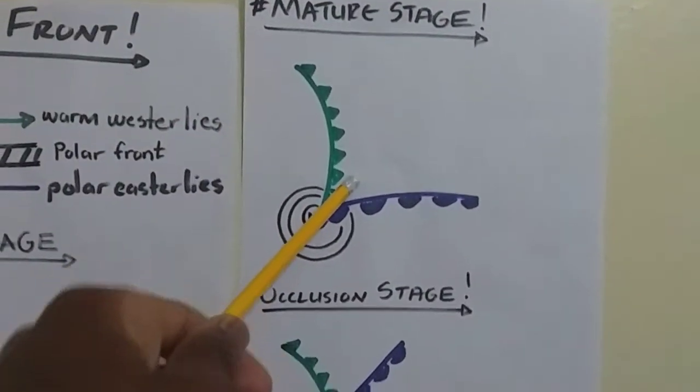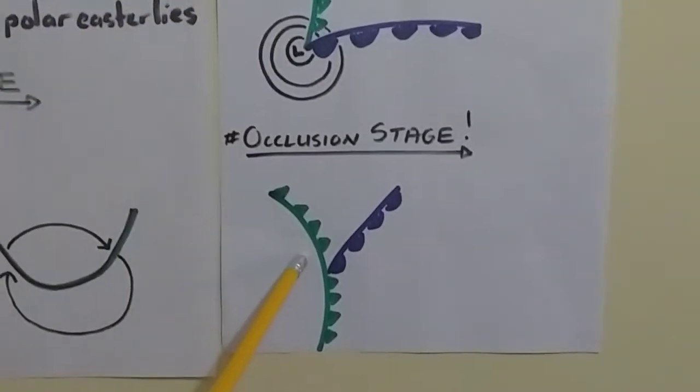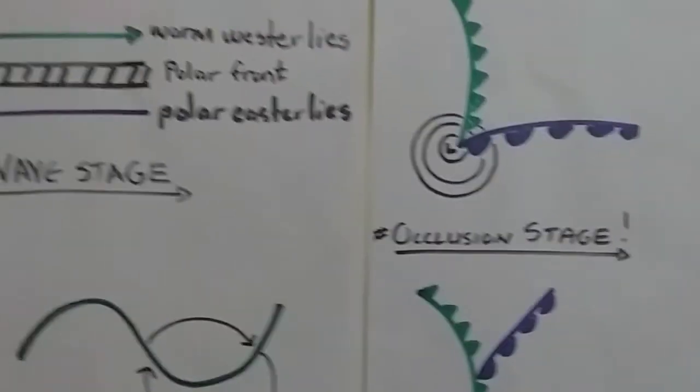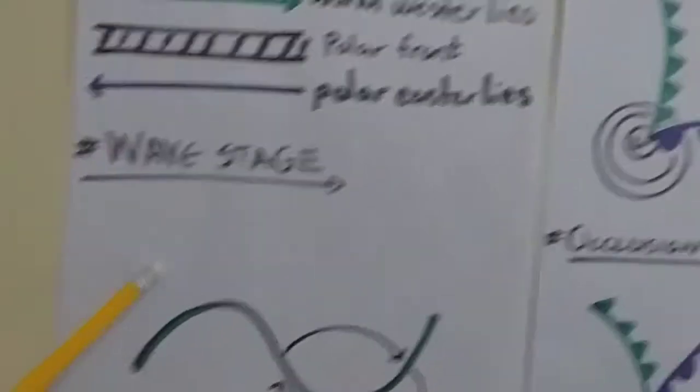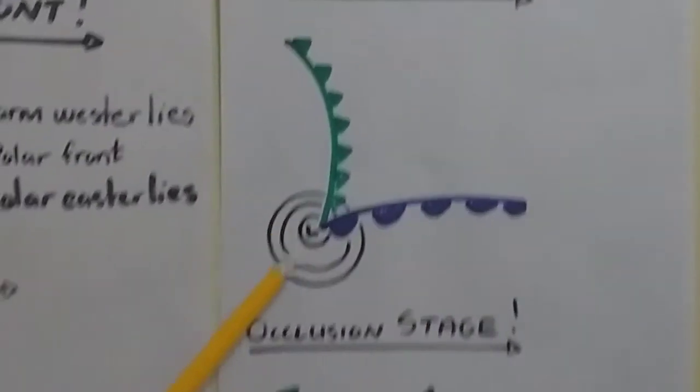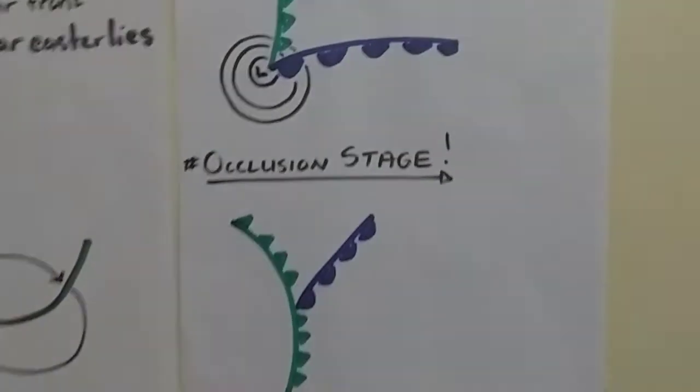So, this one is V-shaped. This one is Y-shaped. Okay. So, now we know that this is the polar front stage, the wave stage, the mature stage, and the occlusion stage.